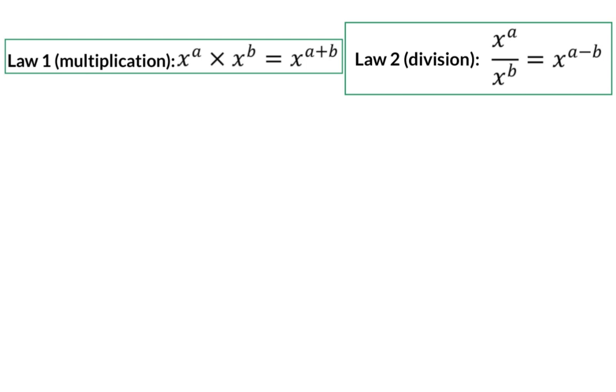The first two exponential laws can be used when you multiply and divide the same base. Law 1 says that when you multiply the same base, you can add the exponents. So when you are asked to simplify and given 2 to the power of 7 times 2 to the power of 4, you will keep the base the same and add the exponents of 7 and 4 to get a new exponent of 11.